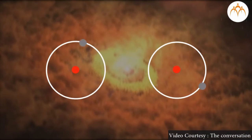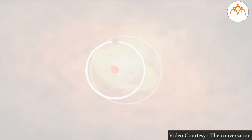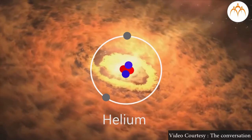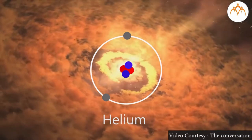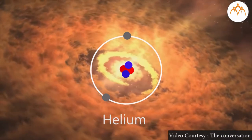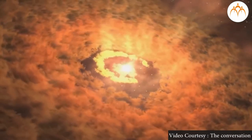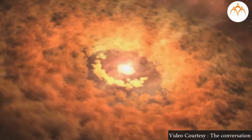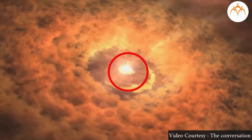Thus the energy generation begins and a star is born. The star keeps on burning for billions of years as they are fueled by the nuclear fusion of hydrogen to form helium. The outflow of energy from the center is important because due to this the star does not collapse due to its own gravity. Larger the star, shorter the life.